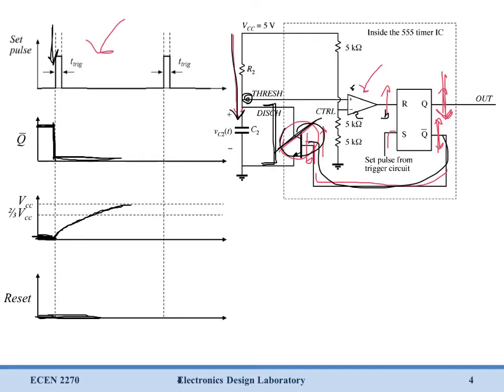Now, as soon as the voltage on C2, or the voltage right here, passes two-thirds of Vcc, you can see that reset's going to shoot high. So really, as soon as we get to two-thirds Vcc, reset is going to pulse high. Now, when reset pulses high, Q bar is going to increase, and so Q bar has now jumped up.